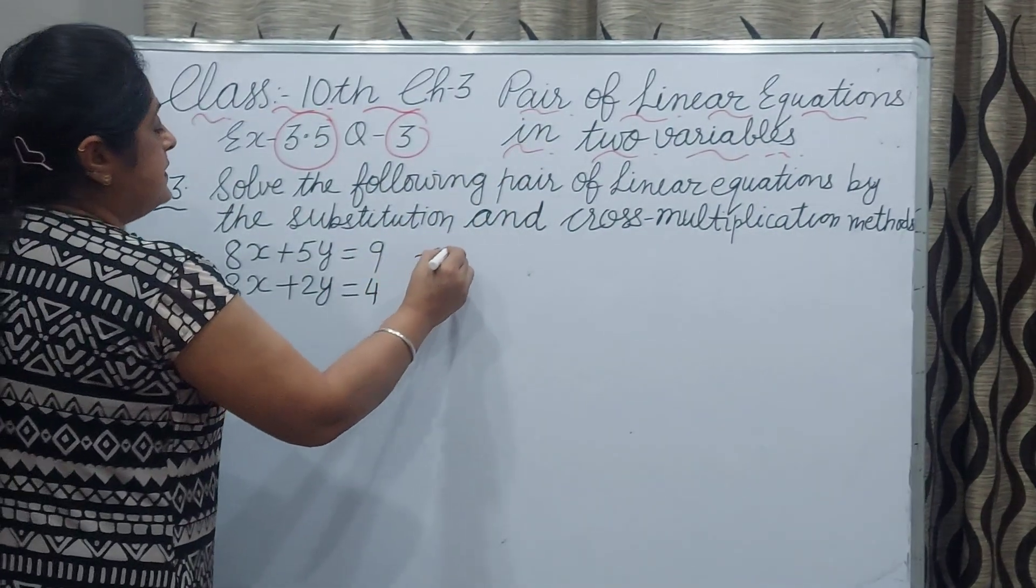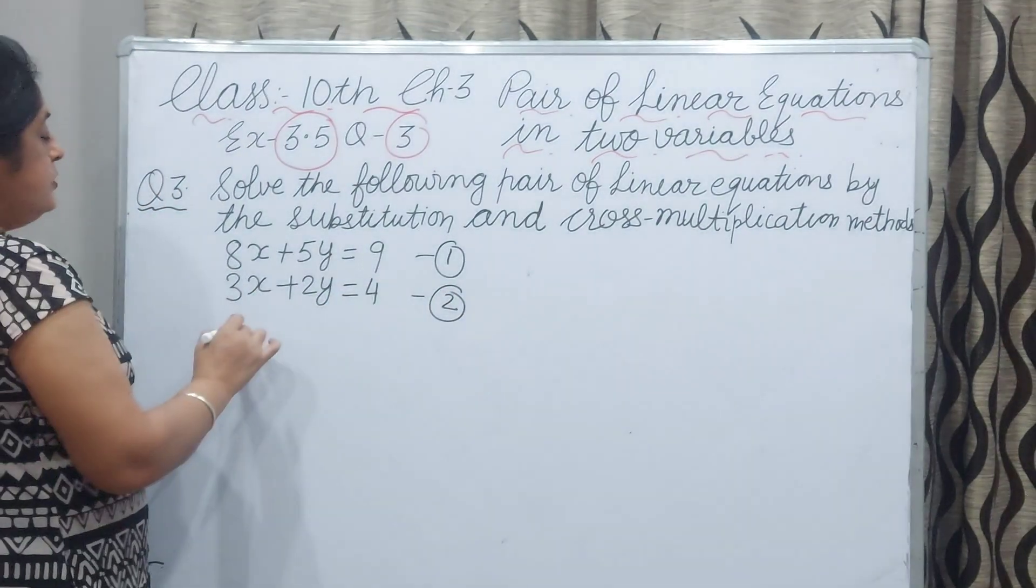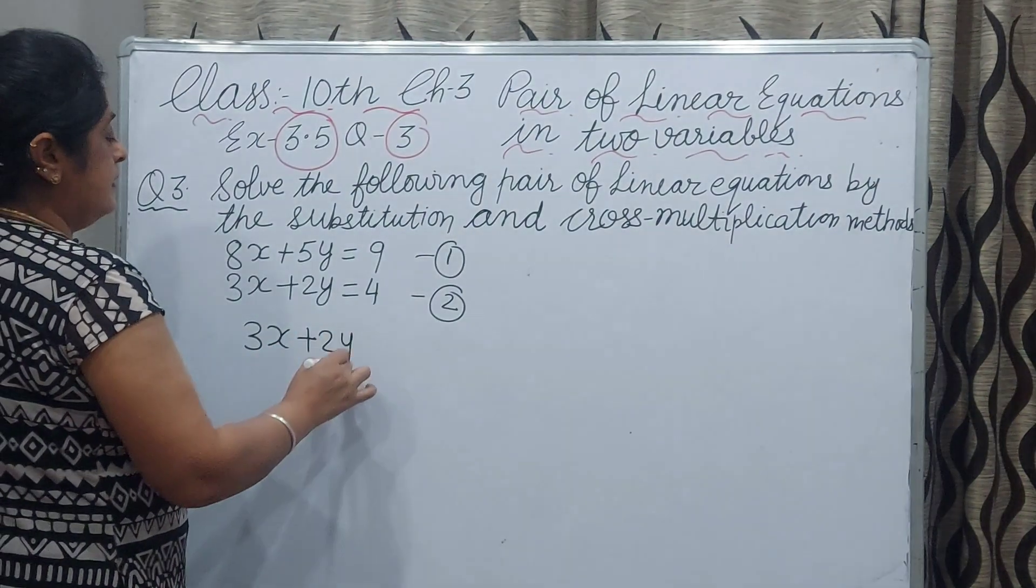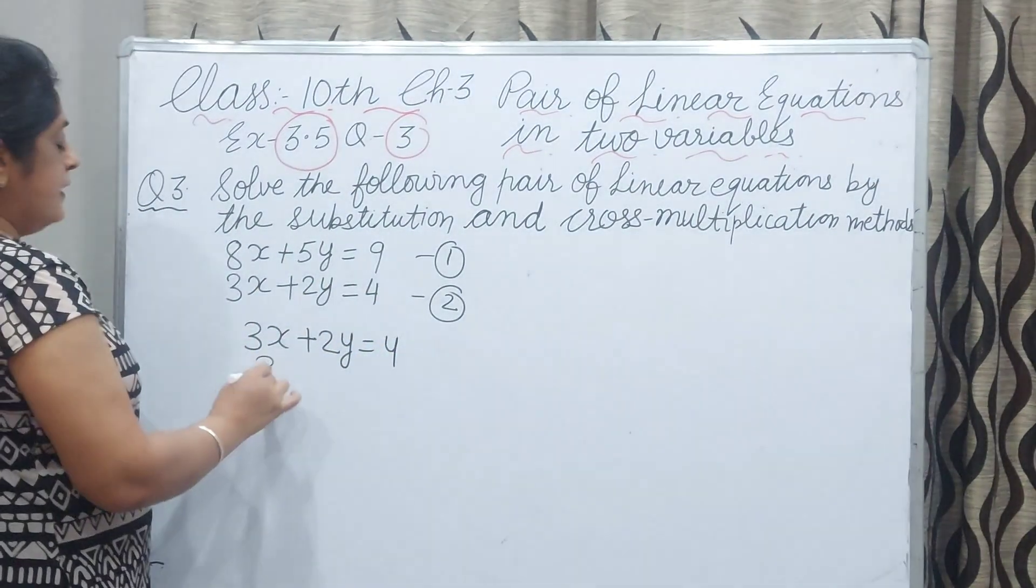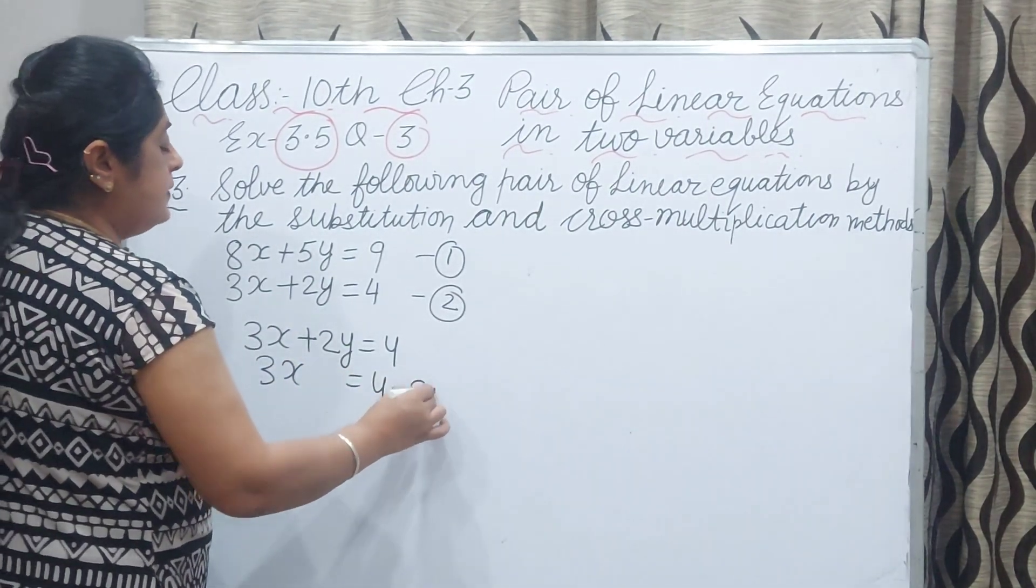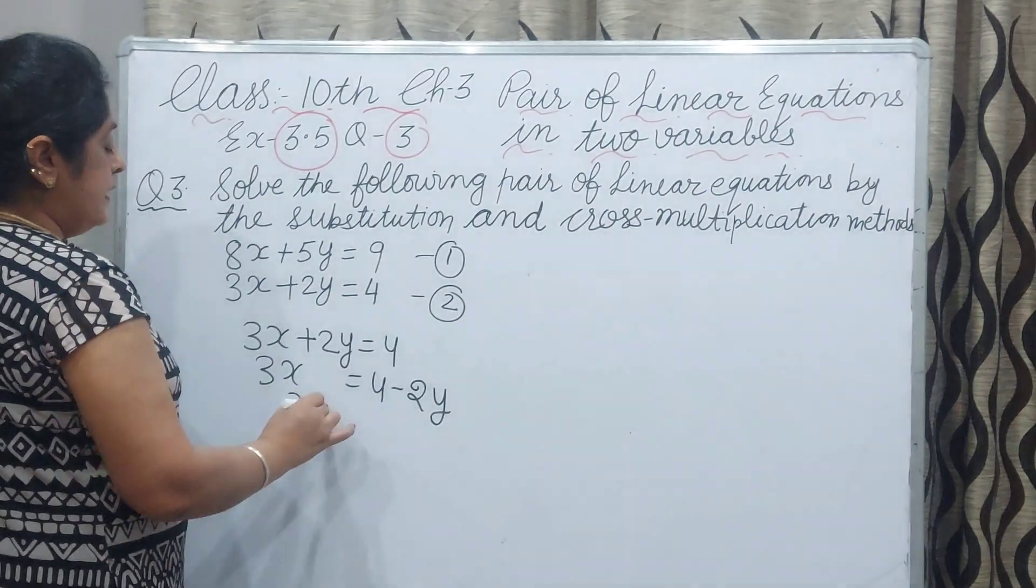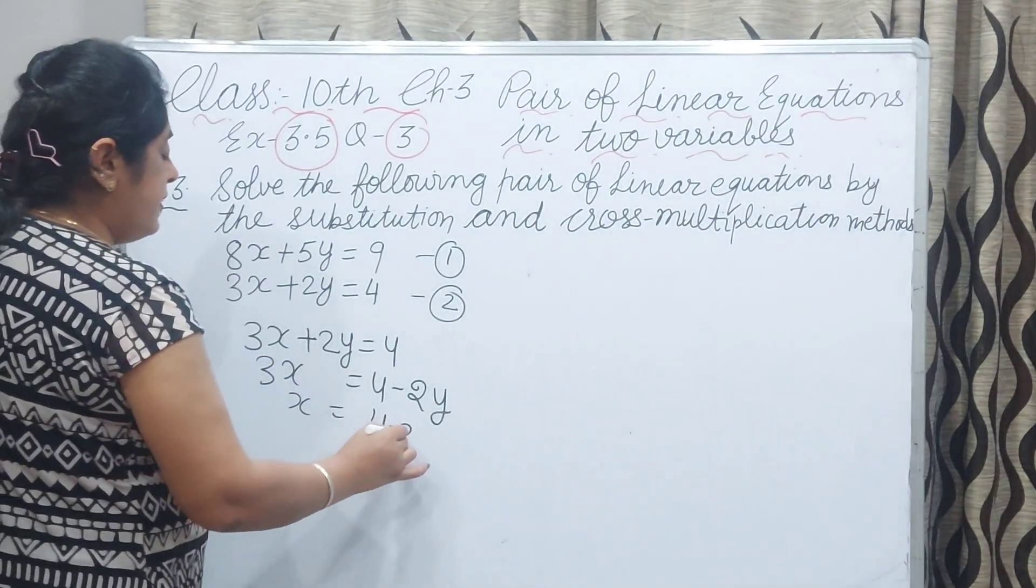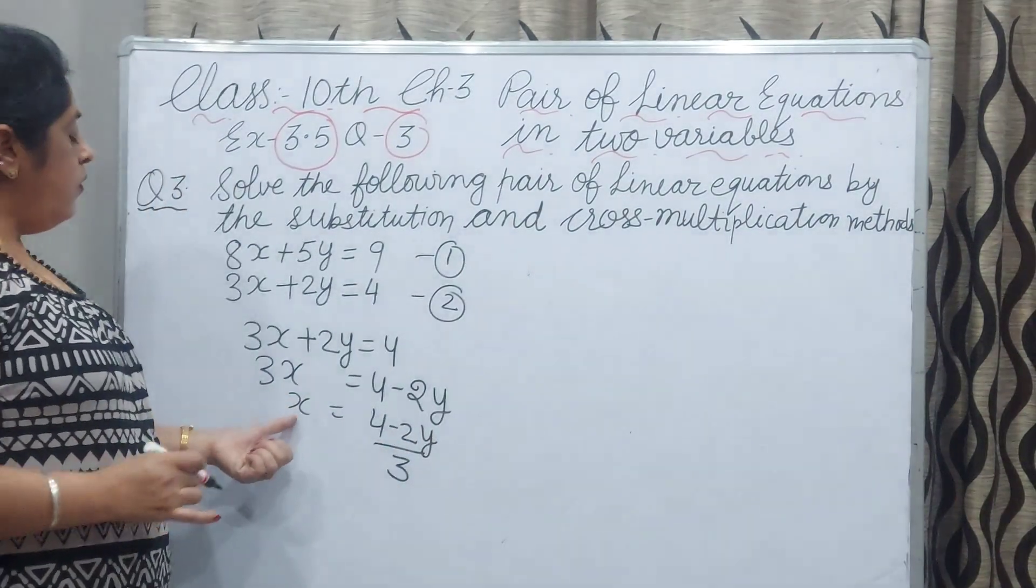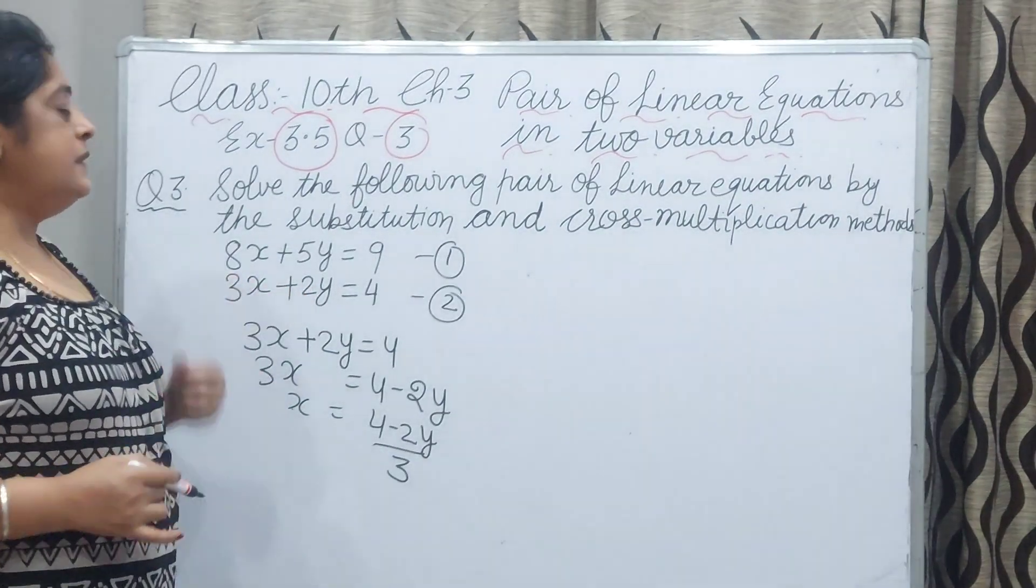This is our equation 1 and this is our equation 2. From equation 2, 3x plus 2y equals 4, I am taking 3x equals 4 minus 2y. Here 3 is multiplied and here it will be divided. x will be 4 minus 2y by 3. Now this x value we will substitute in second equation.